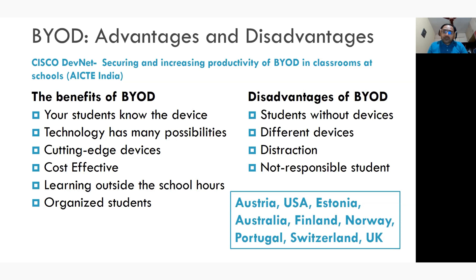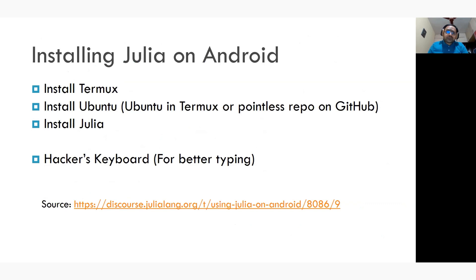You can install Julia on Android, and also on iOS. Visit the provided URL for detailed instructions. In brief, the steps are: install the Termux emulator, then install Ubuntu on Termux — various versions are available — then install Julia on top of Ubuntu, and for a better typing experience, install the Hacker's Keyboard.